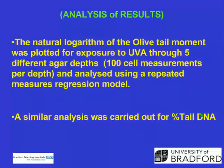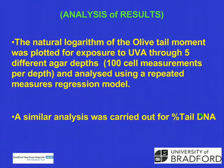The data were analyzed using the natural logarithm of the olive tail moment, as comet assay data tend to be skewed. This was plotted for exposure to UVA through five different agar depths, with 100 cell measurements per depth, giving us those 1,040 values, and it was analyzed using a repeated measures regression model. We also used percentage tail DNA as a second parameter, since scientists working with the comet argue which is the better parameter — so we used both to see what happened.